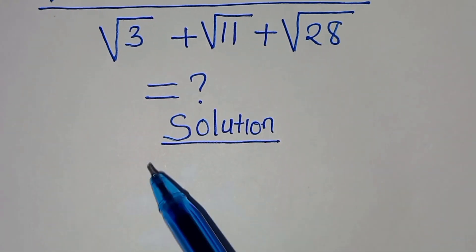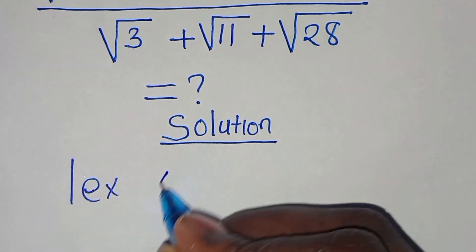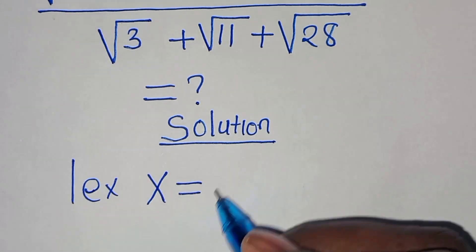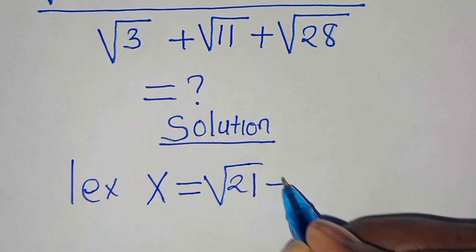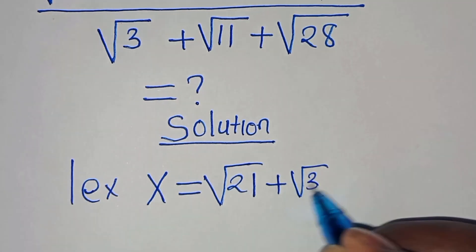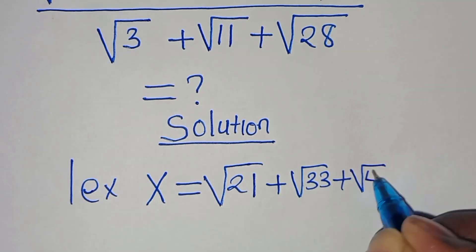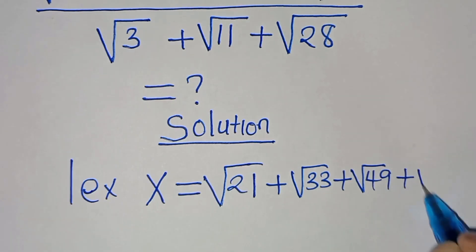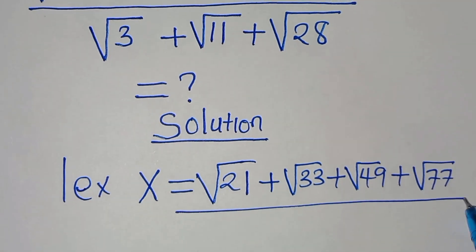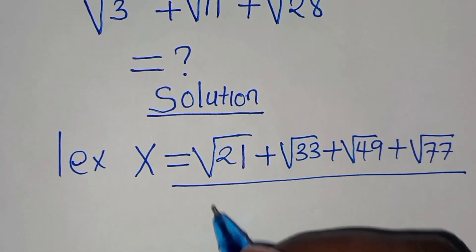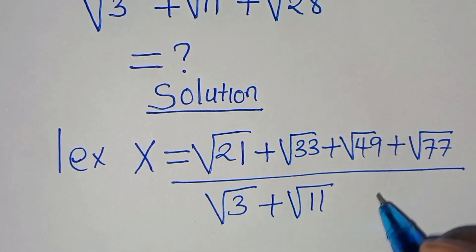We can let x be equal to square root of 21 plus square root of 33 plus square root of 49 plus square root of 77, divided by square root of 3 plus square root of 11.